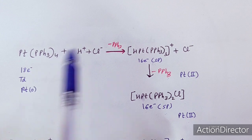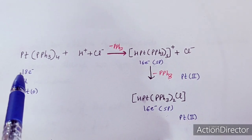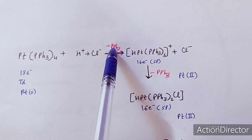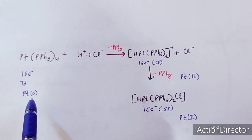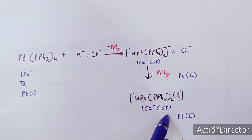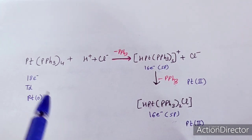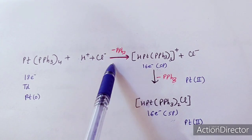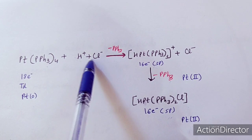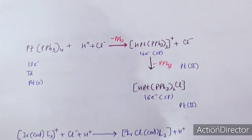For addition of Cl⁻, one PPh₃ will again be removed, with no net change in electron count since one PPh₃ leaves and one Cl⁻ is added — two electrons lost, two electrons added. This gives a 16-electron square planar species where the oxidation state of platinum changes from 0 to +2. This is oxidative addition. If we are adding organic halides it is SN2 mechanism; if we are adding hydrogen halides it is ionic mechanism.